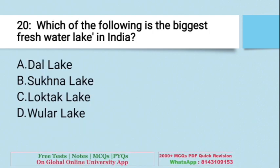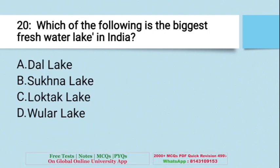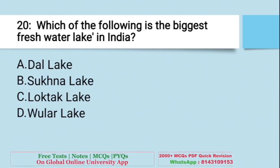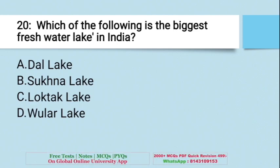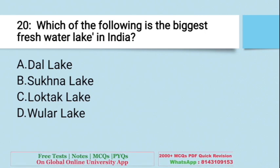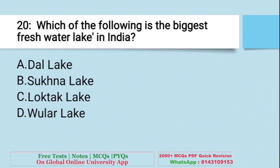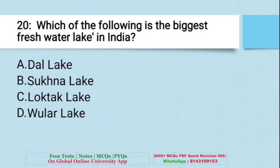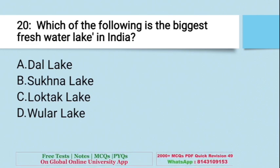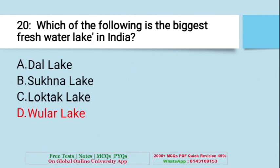Question: Which of the following is the biggest freshwater lake in India? A. Dal Lake, B. Sukhna Lake, C. Loktak Lake, D. Wular Lake. The right answer is D — India's biggest freshwater lake is Wular Lake.